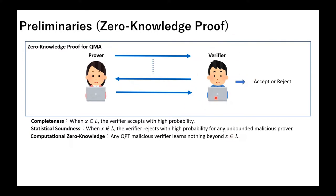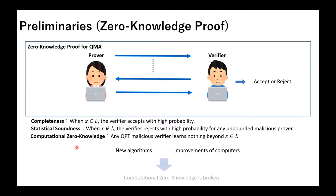When the verifier is computationally bounded, we call the zero-knowledge property computational zero-knowledge. However, computational zero-knowledge has the risk that a new algorithm or improvements of computers may solve the problem underlying the security of computational zero-knowledge. So, computational zero-knowledge does not necessarily guarantee long-term security. In other words, in computational zero-knowledge, the malicious verifier may obtain information beyond the fact that the instance X is a yes instance in the future. This is undesirable.